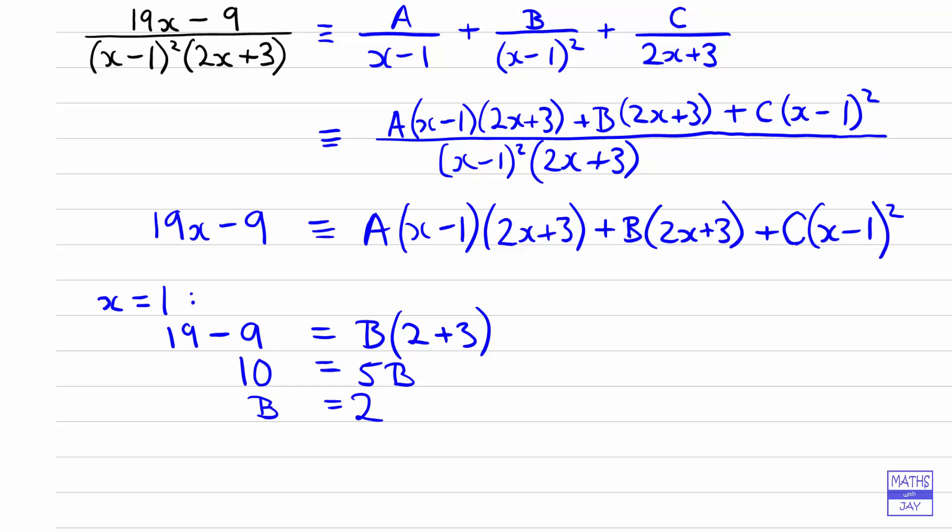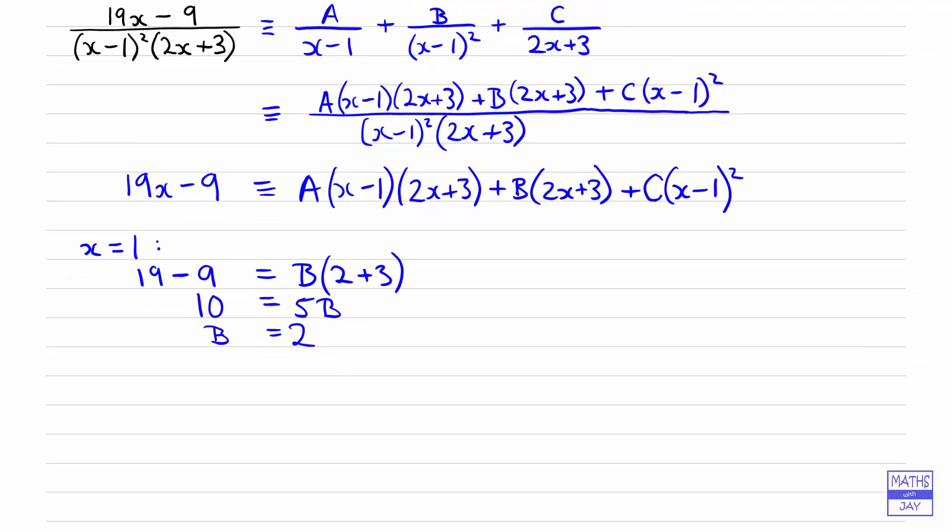And then, not quite as simple, let's put the other bracket to 0. So 2x plus 3. So 2x plus 3 is 0 gives us that 2x is negative 3. So x is negative 3 over 2. So let's see what that gives us. So that will give us, on the left-hand side, 19 multiplying negative 3 over 2 minus 9. And then on the right-hand side, A will multiply 0, so will B. So all we're left with on the right-hand side is C multiplying negative 3 over 2, take away 1, squared.